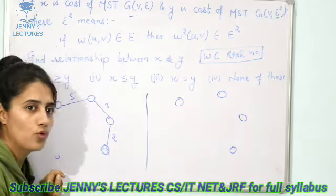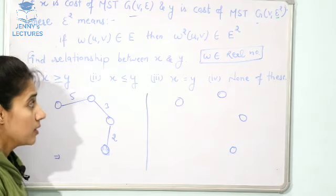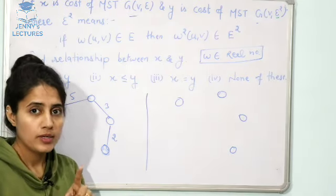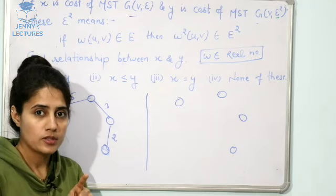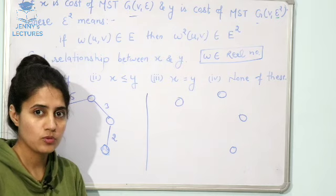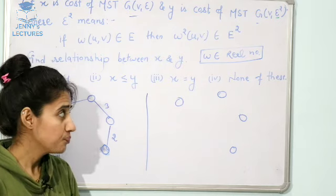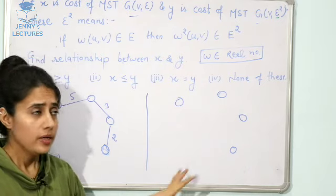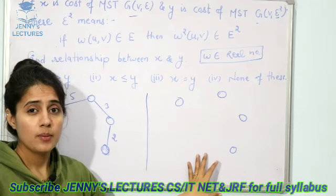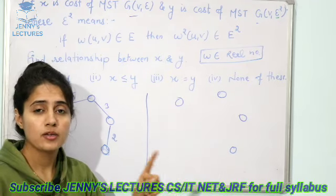Here we have four vertices. Here also we will have four vertices. One property of MST - we have already discussed some properties of MST, key points of MST. I will give you the link of that video in the description box. What is the property? If there are n number of vertices in the MST, then the number of edges would be n minus 1.